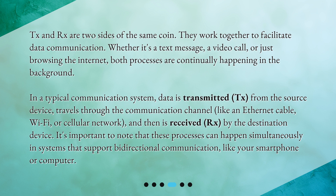In a typical communication system, data is transmitted (TX) from the source device, travels through the communication channel — like an Ethernet cable, Wi-Fi, or cellular network — and then is received (Rx) by the destination device. It's important to note that these processes can happen simultaneously in systems that support bi-directional communication, like your smartphone or computer.